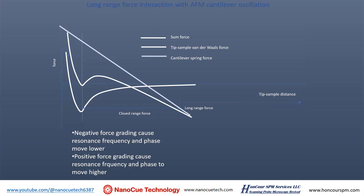A negative force gradient causes a resonant frequency shift, and a positive force gradient also causes a resonant frequency shift. Other than this short range force, there is also long range force. Here we overlap some long range force gradient — for example, magnetic force. The atomic force microscope tip will sense the force, whether it comes from a magnetic force, an electrical static force, or other sources. It is long range force: a force beyond 10 nanometers, all the way to a couple of microns.